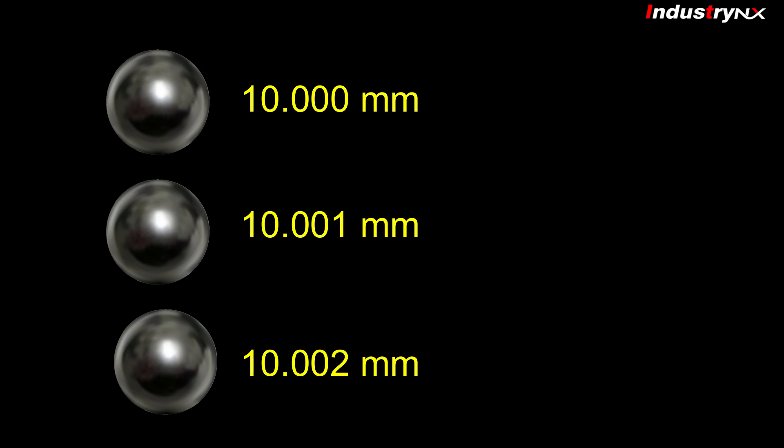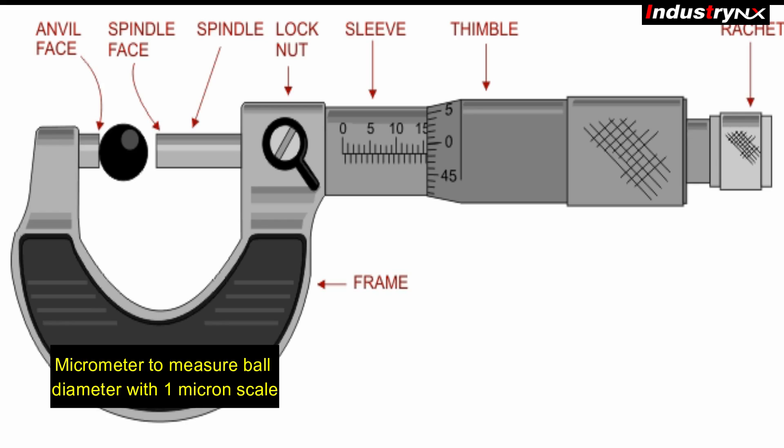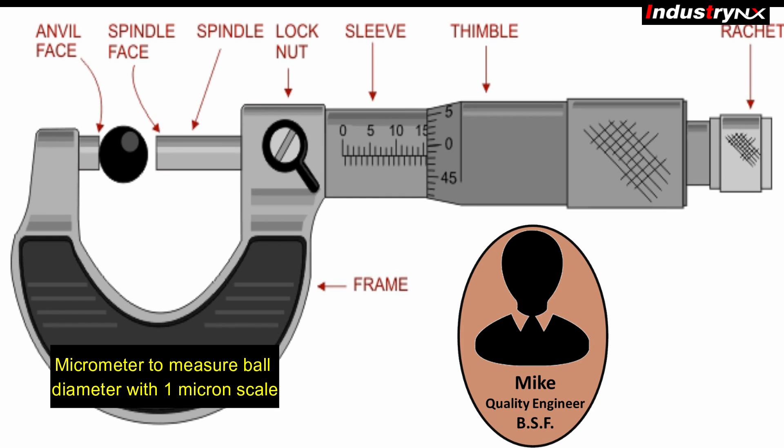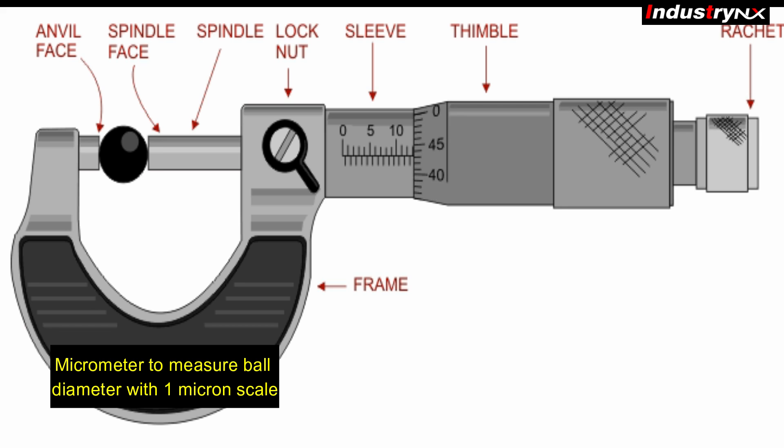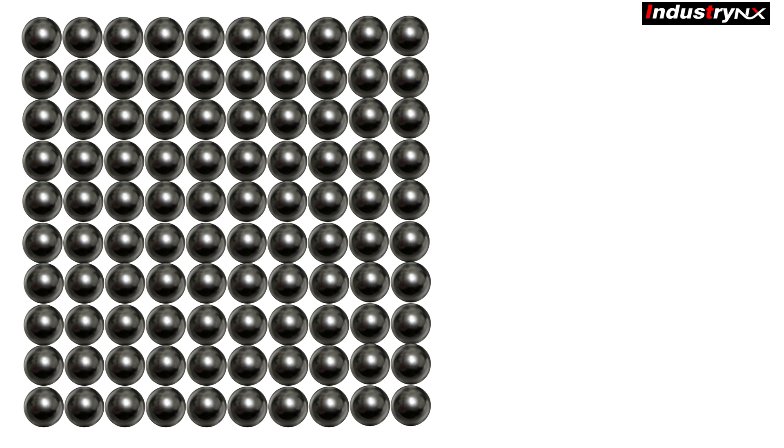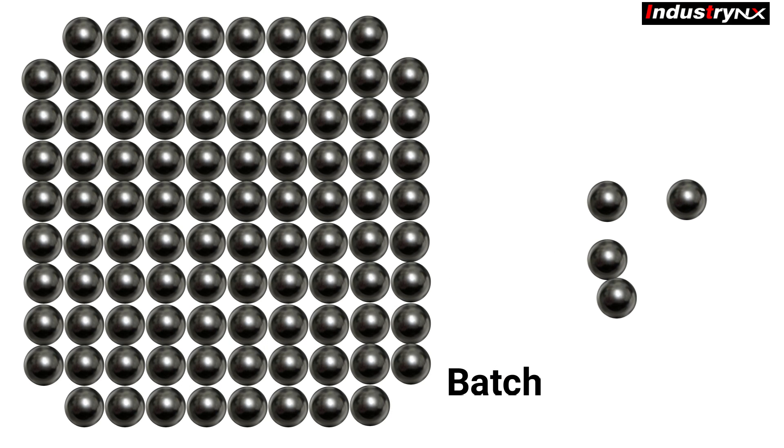Practically, it is not possible to measure all ball sizes with micrometer. Hence, Mike decided to do sampling inspection and conclude to certify the batch. In statistics study, sample inspection is very popular to conclude probability of complete population.